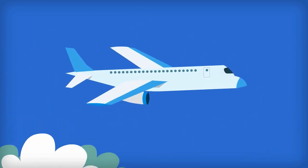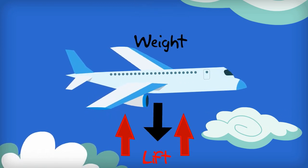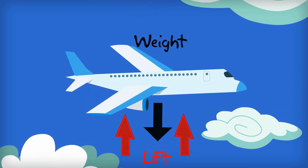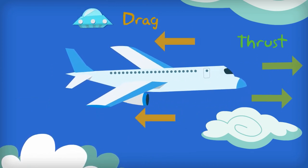In level flight, the upward lift applied to the wings of an airplane is equal to the downward weight of the plane, while the forward thrust of the propeller is equal to the air frictional drag on the plane.